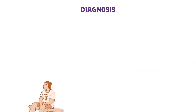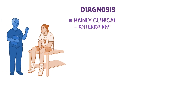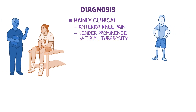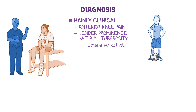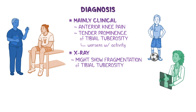The diagnosis of Osgood-Schlatter disease is mainly clinical, based on anterior knee pain and tender prominence of the tibial tuberosity, which worsens with activity seen in a physically active adolescent. X-ray is not necessary for the diagnosis, but might show fragmentation of the tibial tuberosity in severe cases.